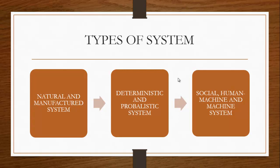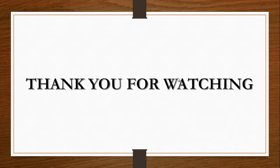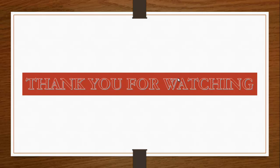It is worth noting that there can be overlapping classifications — a system that is open or closed can also be adaptive or non-adaptive, and a permanent system can also be natural or manufactured. With that, we come to the end of the class today. I hope you have enjoyed the class. Please don't forget to hit the subscribe button, like the video, and leave your comments so I can know what areas to cover in future videos. Thank you very much for watching.